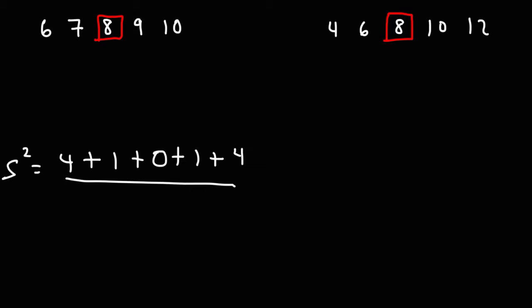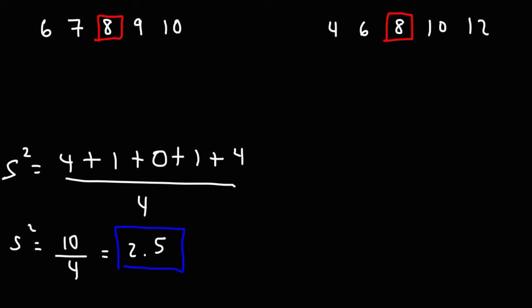And we're going to divide by n minus 1. We have 5 data points, so 5 minus 1 is 4. So 4 plus 1 plus 0 plus 1 plus 4 equals 10. And 10 divided by 4 is 2.5. So this is the variance of the first data set.